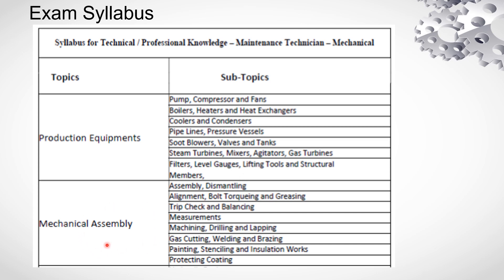The second part is mechanical assembly — specifically assembly and dismantling. This includes production drawing, machine drawing, and equipment assembly and dismantling procedures.